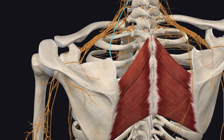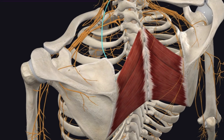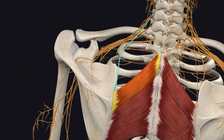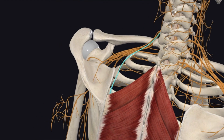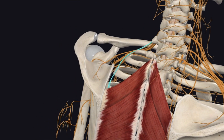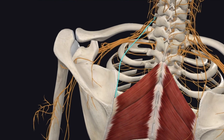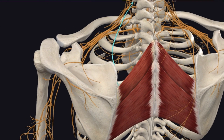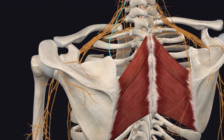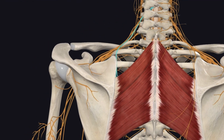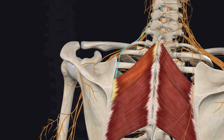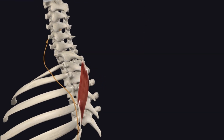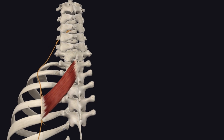Both muscles are innervated by the dorsal scapular nerve. The primary nerve root is C5 — most commonly seen as that nerve being derived from the ventral branch of C5. There is a possibility of C4 involvement, but that's not nearly as common as pure C5. The dorsal scapular nerve also innervates the levator scapulae muscle, so you do see a little coordination there.